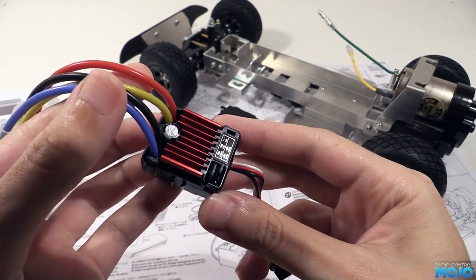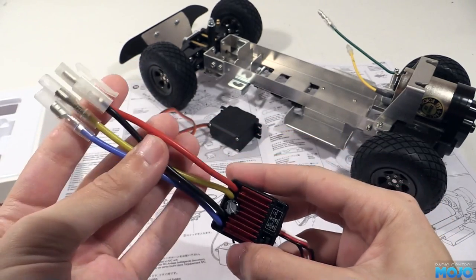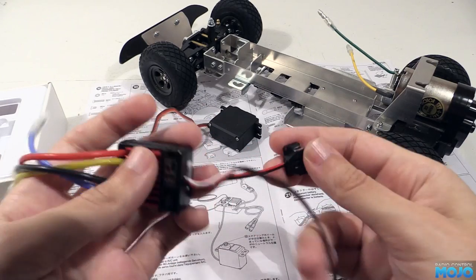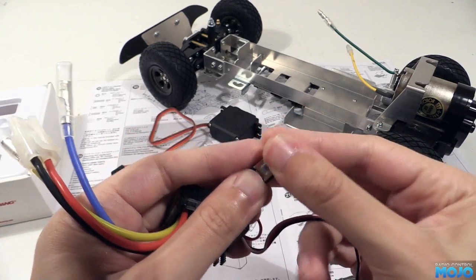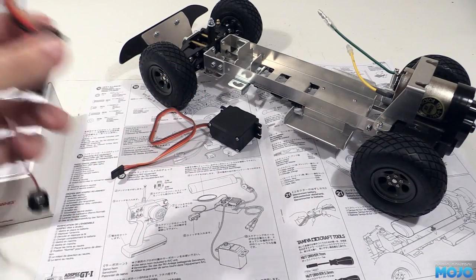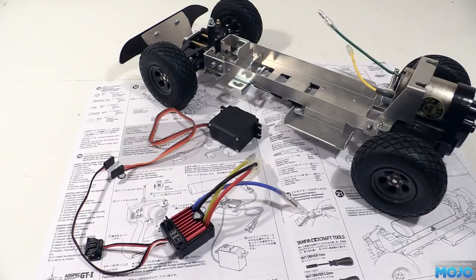It's got the Tamiya style control, where pulling the trigger on the transmitter is forward, pushing the trigger away is the brake, and pushing it away for a second time puts it into reverse. It's not ideal for the RC Mojo light controllers, so I might swap it for a crawler type ESC later.